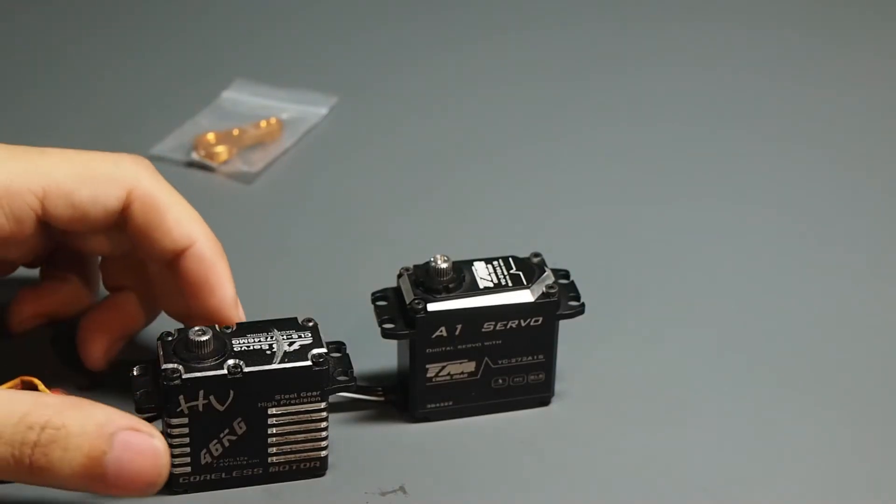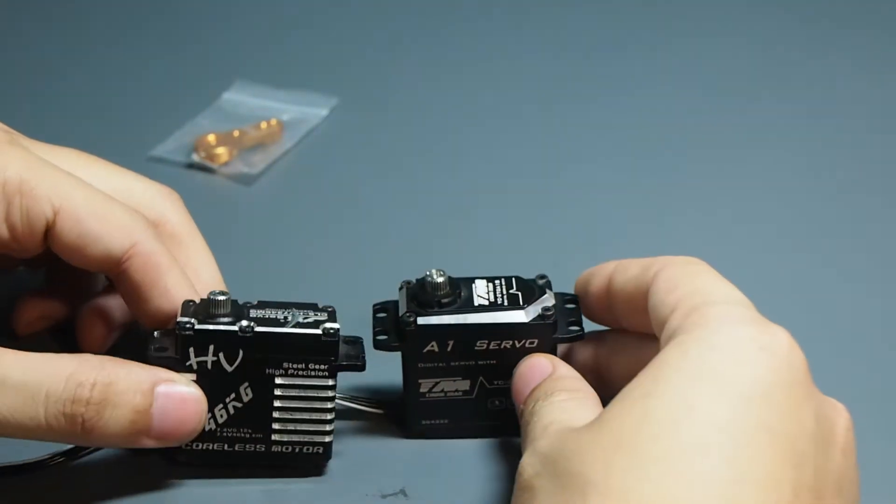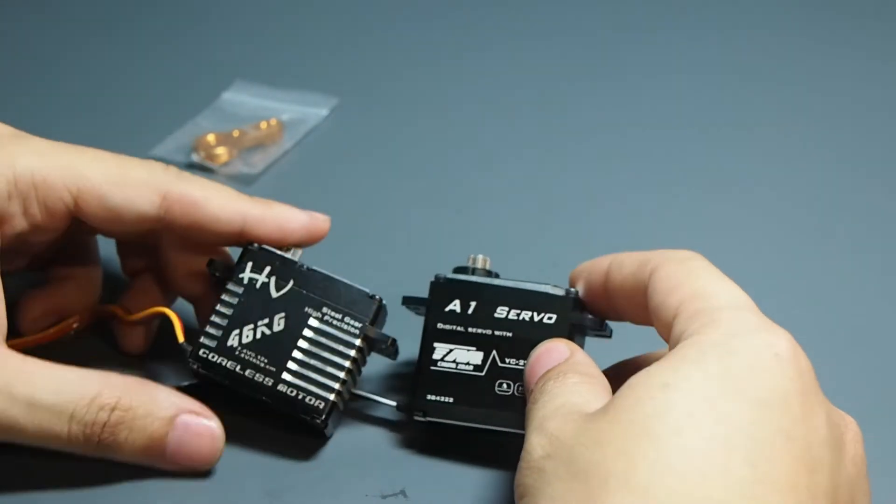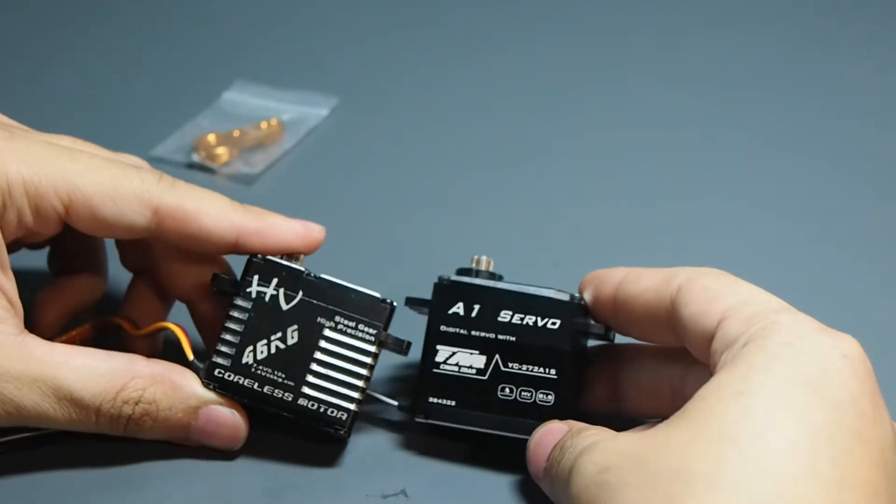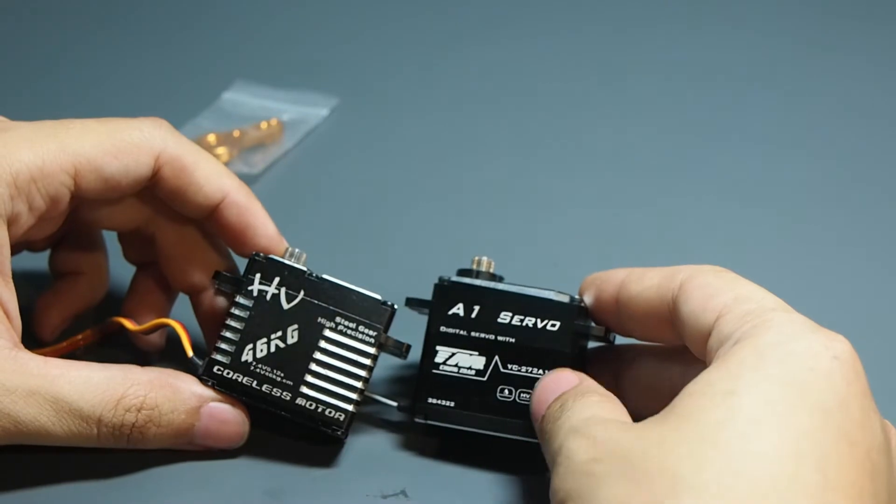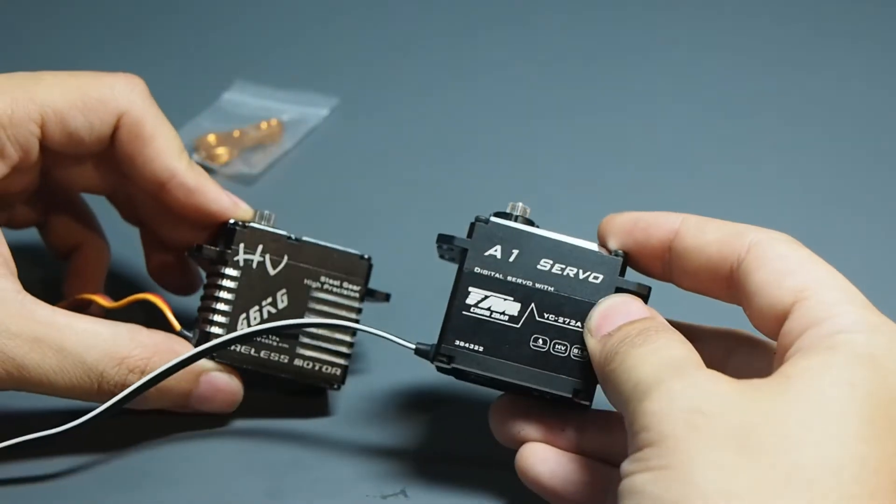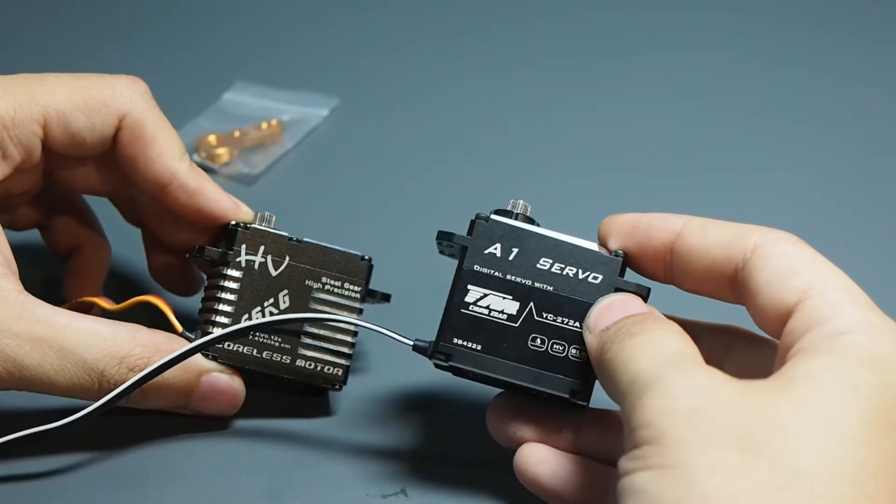I wanted to make a comparison and review video of the two servos that I have. One is the very popular JX 46kg servo and one is from a company called CY and it's called A1 servo.